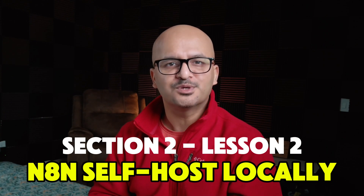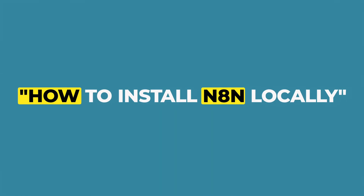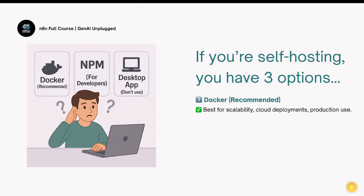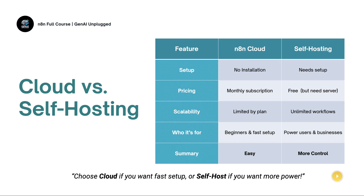We just looked at the n8n cloud platform, which was our first option. The second option is how you can install it on your own local machine. For your own installation, you have multiple options. The first option is using the Docker image which is already available. If you don't understand what Docker is, we'll just follow certain steps — you don't need to get technical. This option is more suitable for people who are more technical in nature.